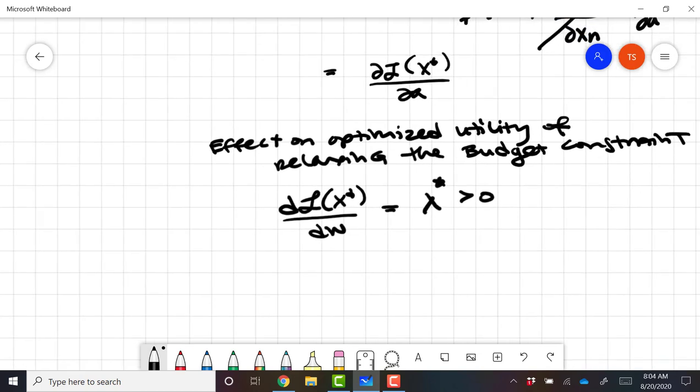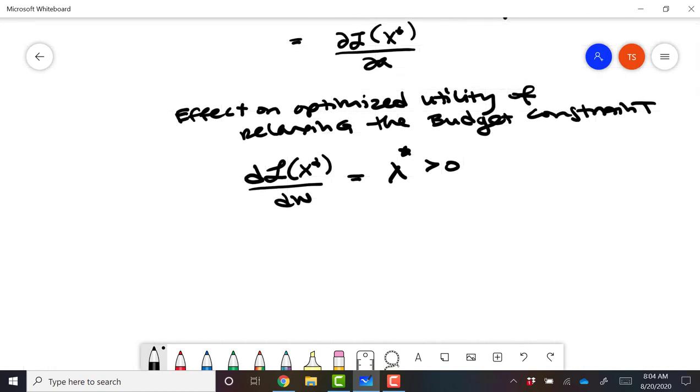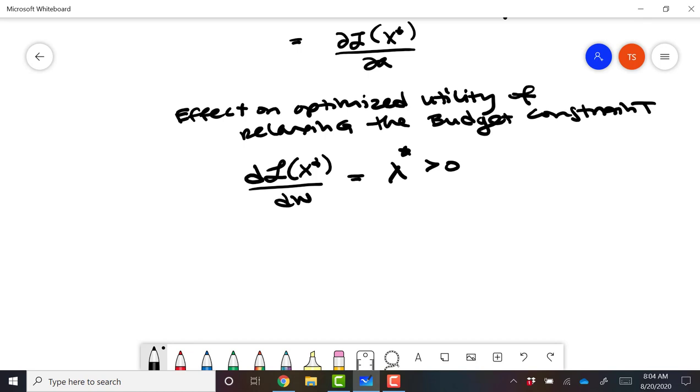So lambda star, when solved, will be the amount by which the optimal utility increases when relaxing the budget constraint.